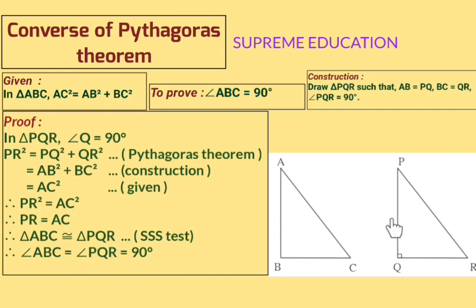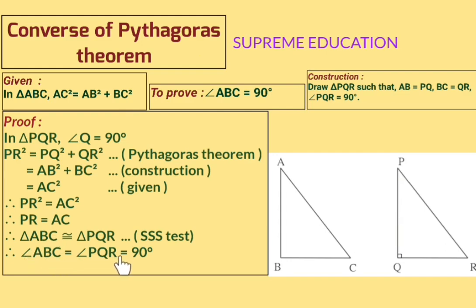Since the two triangles are congruent, their corresponding angles are also congruent. We need the pair angle ABC and angle PQR. Hence angle ABC is congruent to angle PQR, by corresponding angles of congruent triangles. But angle PQR = 90°, hence angle ABC = 90°. We have reached our target: angle ABC = 90°. In this way, we have proved the Converse of Pythagoras theorem.